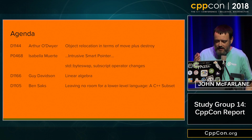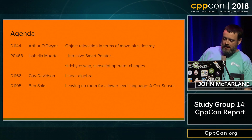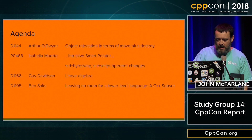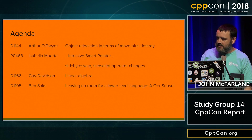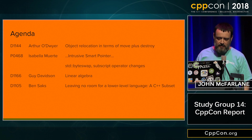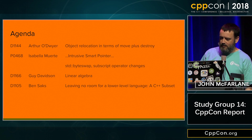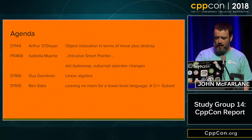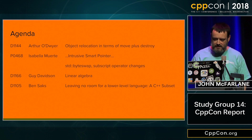So this was the agenda. We basically went deep on a few papers. Arthur's paper on object relocation — basically, if you're aware of how you have a vector of ints, for instance, you can use memcopy to copy that vector very efficiently. There are a few situations still where you cannot use memcopy, many of which Arthur aims to eliminate with this trait.